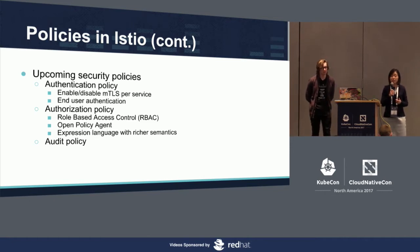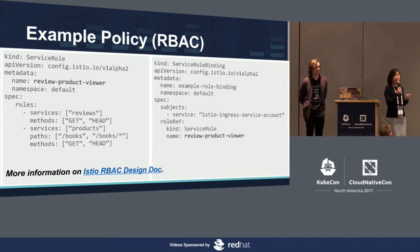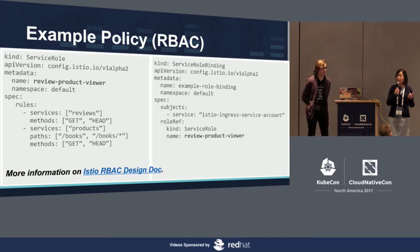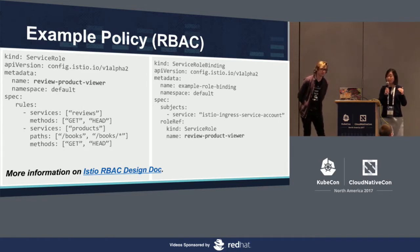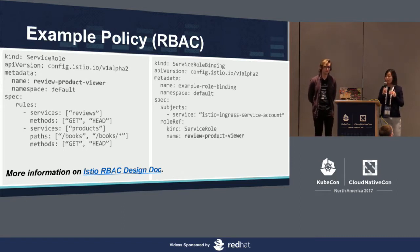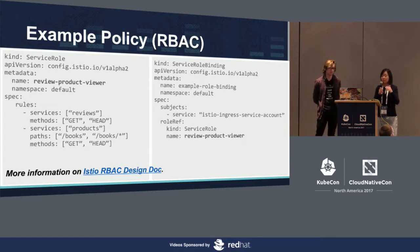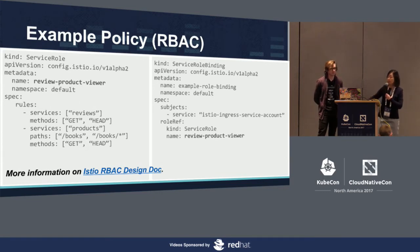The auditing policy will allow you to specify when to audit and what to audit. Here is an example of how RBAC policy looks. On the left side, I define a service role object called 'review product viewer.' It allows you to read a review service and read a product service. On the right side, I define a service role binding object. It assigns the review product viewer role to a given service account. You can specify other identities like a user, JWT claims, or other attributes to specify the subjects.